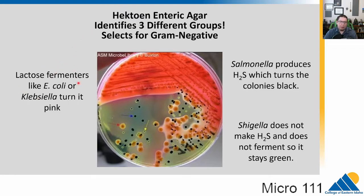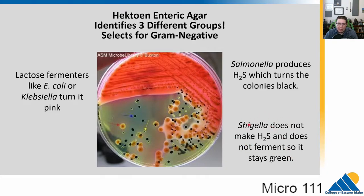So this was all because of biochemical differences in metabolism, and we used Hektoen agar to identify different groups. Lactose fermenters like E. coli would turn pink on this agar so we could rule them out. Salmonella makes hydrogen sulfide and turns colonies black — we did not see that here. The greenish colonies visible on the plate were the Shigella, the ultimate cause of the illness. This agar is really useful: it's a very rapid, cheap, and easy test to perform.